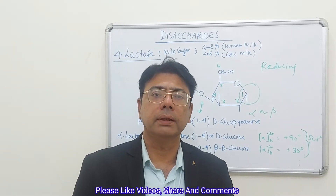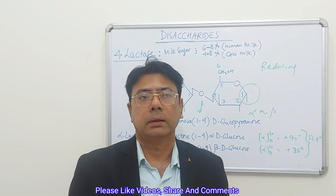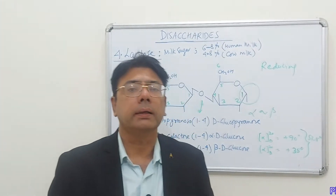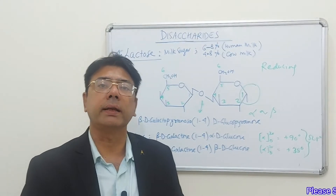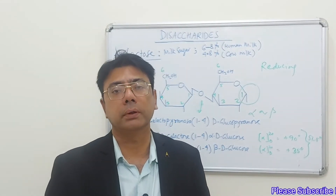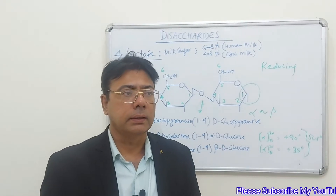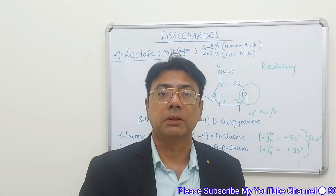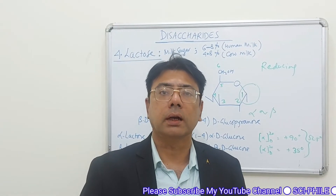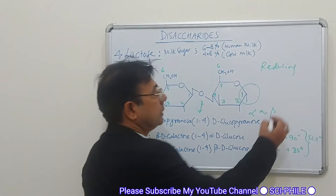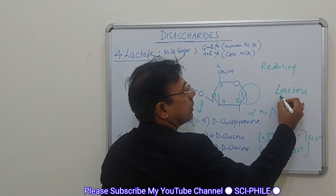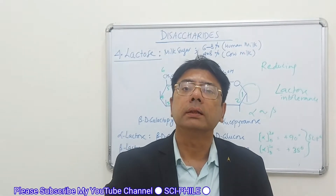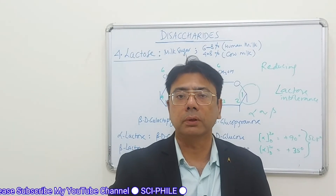Lactose is reducing in nature because it has a free carbonyl group, and it also exhibits mutarotation. The specific rotation of the alpha form is +90° and of the beta form is +35°, and both forms form an equilibrium mixture with a specific rotation of 52.5°. Importantly, every human baby is equipped with the enzyme lactase to digest lactose, but in several adults the inability to digest lactose — due to lactase deficiency — is called lactose intolerance, an important medical condition in several ethnic groups worldwide.